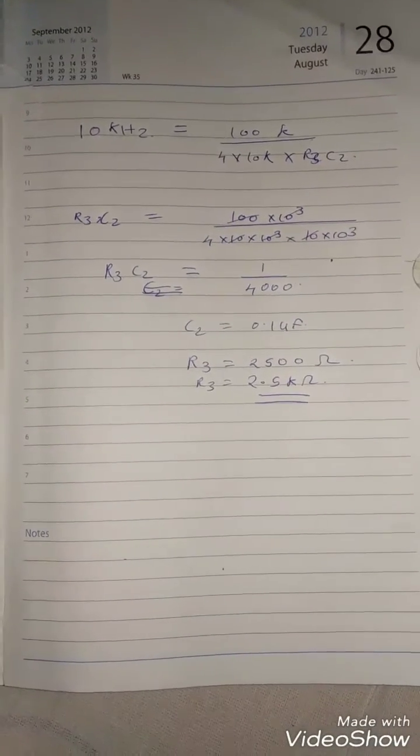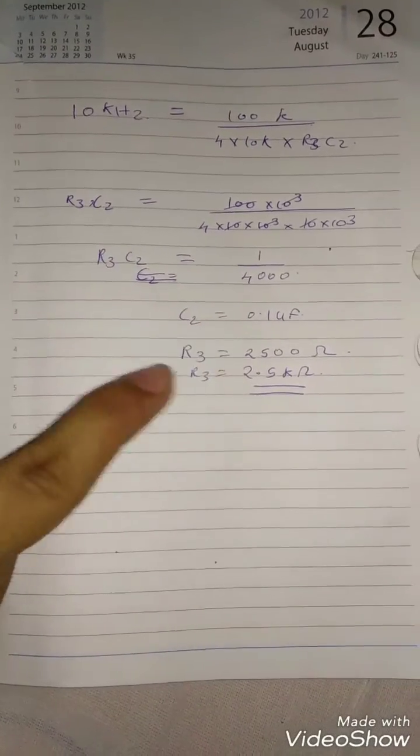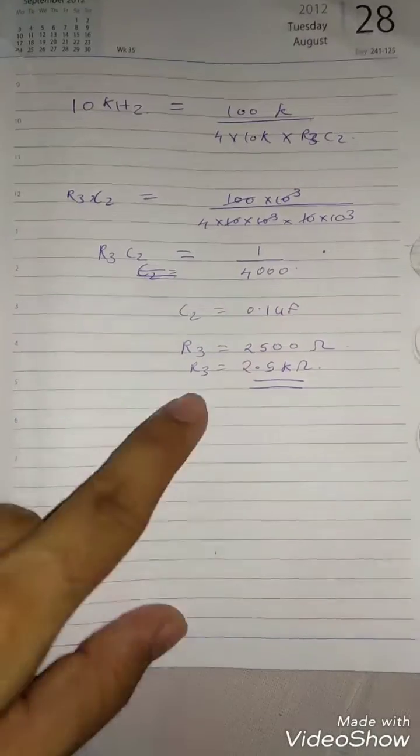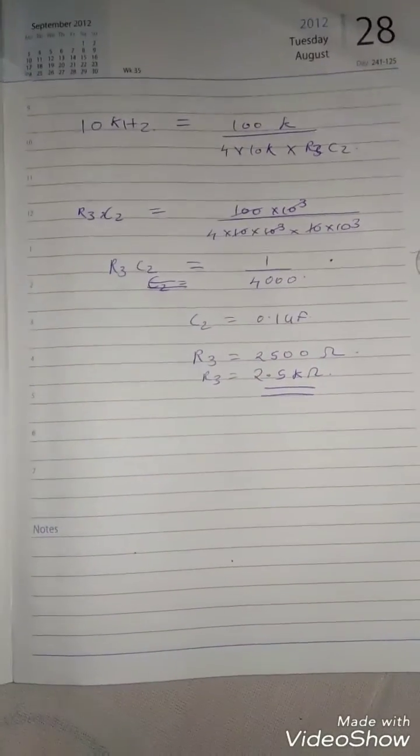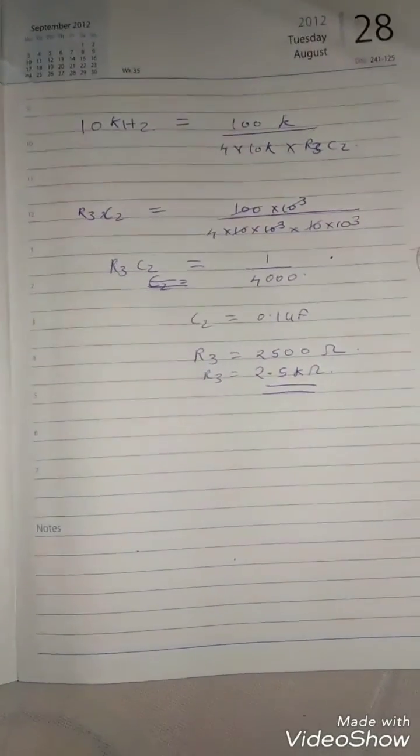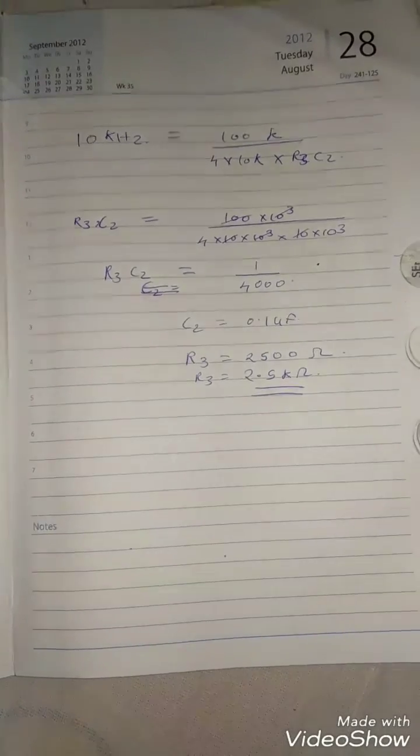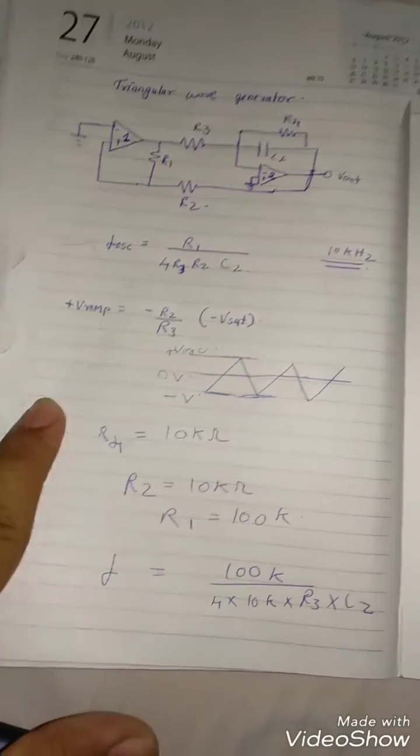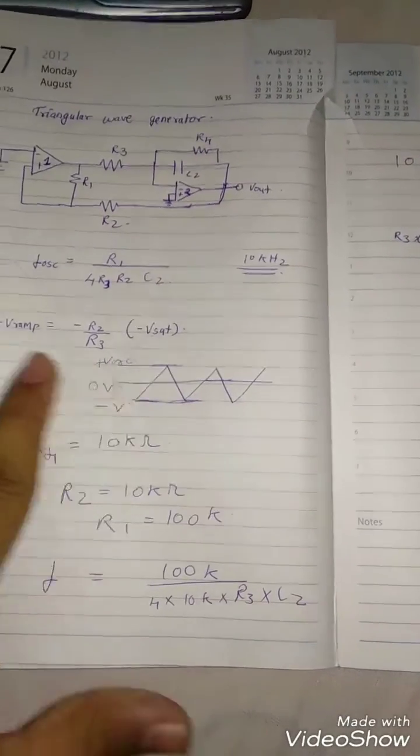So here as we solve ahead, R3 C2 is equal to 1 upon 4000 and we assume C2 as 0.1 microfarad and we get our R3. Equivalently we can do it for other waveforms of higher frequency or lower frequency. Just remember this VRAM concept if it is asked in exam - this formula is important.